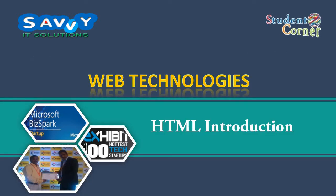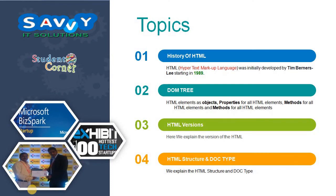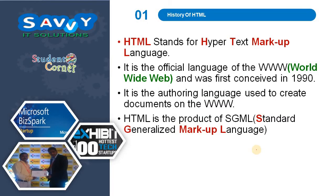Today we need to know about the History of HTML. We already know what Web Technologies are and what keywords are used in Web Technologies. Now we are learning HTML. The topics we need to discuss are: history of HTML, DOM tree (Document Object Model), HTML versions, HTML structure, and document type.